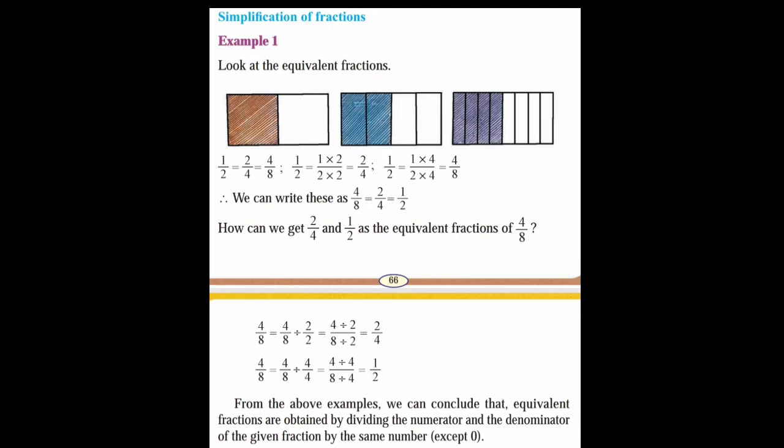Example 1: Look at the equivalent fractions. 1/2 is equal to 2/4 is equal to 4/8. We get this by: 1/2 = (1×2)/(2×2) — so 2 twos are 4. Same way, 1/2 = (1×4)/(2×4) — 1 four is 4, 2 fours are 8. Therefore, we can write: 4/8 = 2/4 = 1/2.